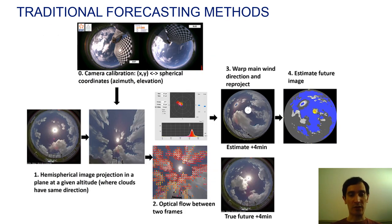The traditional forecasting method at EDF consists in the following steps. First, fisheye camera calibration with calibration patterns and the OCam Calib toolbox. Second, projection of the hemispherical images on a plane at a given altitude.